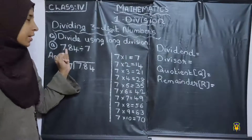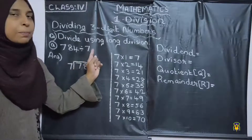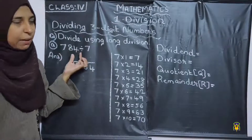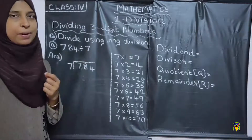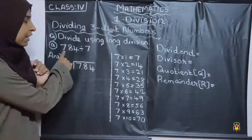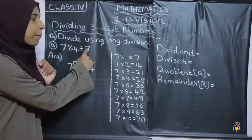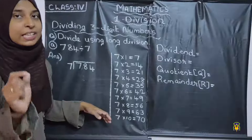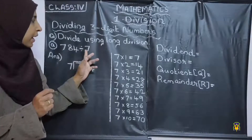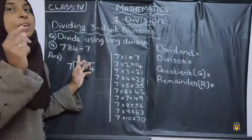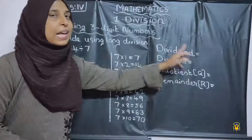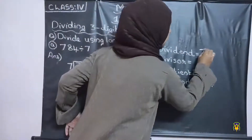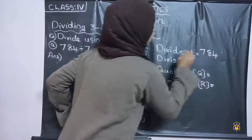So first, look here: 784 divided by 7. Here, 784 is a 3-digit number and 7 is a 1-digit number. We are dividing 784 by 7. The number to be divided is called the dividend. So in this case, the dividend is 784.